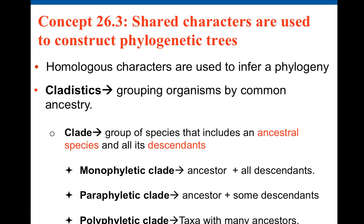Concept 26.3: Shared characters are used to construct phylogenetic trees. Homologous characters are used to infer phylogeny. Cladistics refers to grouping organisms by common ancestry. What you group together is called a clade. A clade is a group of species that includes an ancestral species and all its descendants. There are three types: monophyletic, paraphyletic, and polyphyletic.